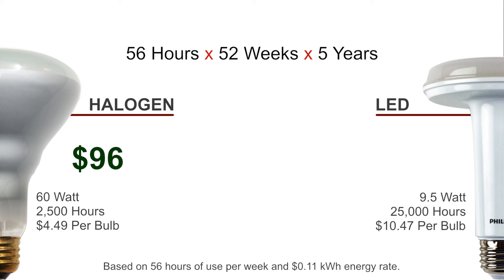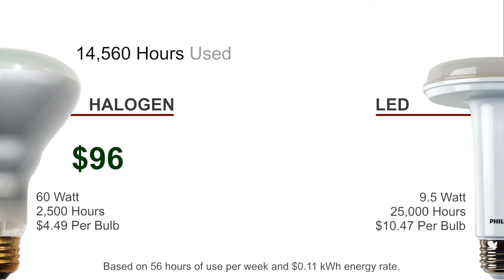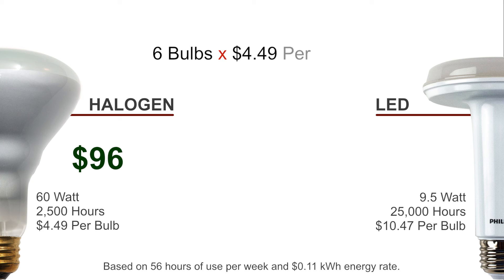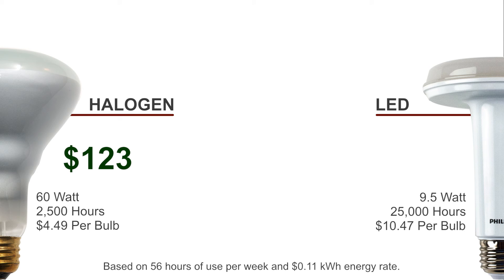Now let's figure the cost of the bulbs themselves. 56 hours per week times 52 weeks times 5 years — that's 14,560 hours of use. Divide that by the 2,500-hour rated life of the bulb. We will change the bulb 6 times over 5 years at $4.49 per bulb. That brings our 5-year cost of ownership for the halogen up to $123.